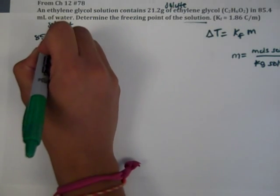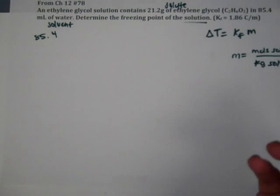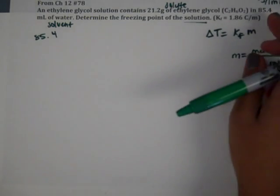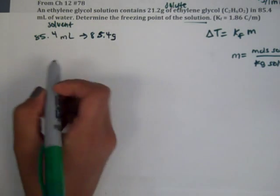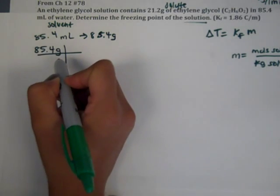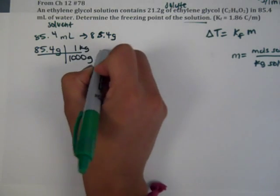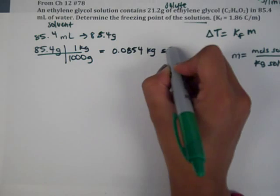We can quickly make 85.4 into kilograms. 85.4 milliliters, and we know the density of water is one gram per milliliter. So if we have 85.4 milliliters, we have 85.4 grams. Now we can convert the 85.4 grams into kilograms by just dividing by a thousand, and that gives us the kilograms of solvent, which is water.